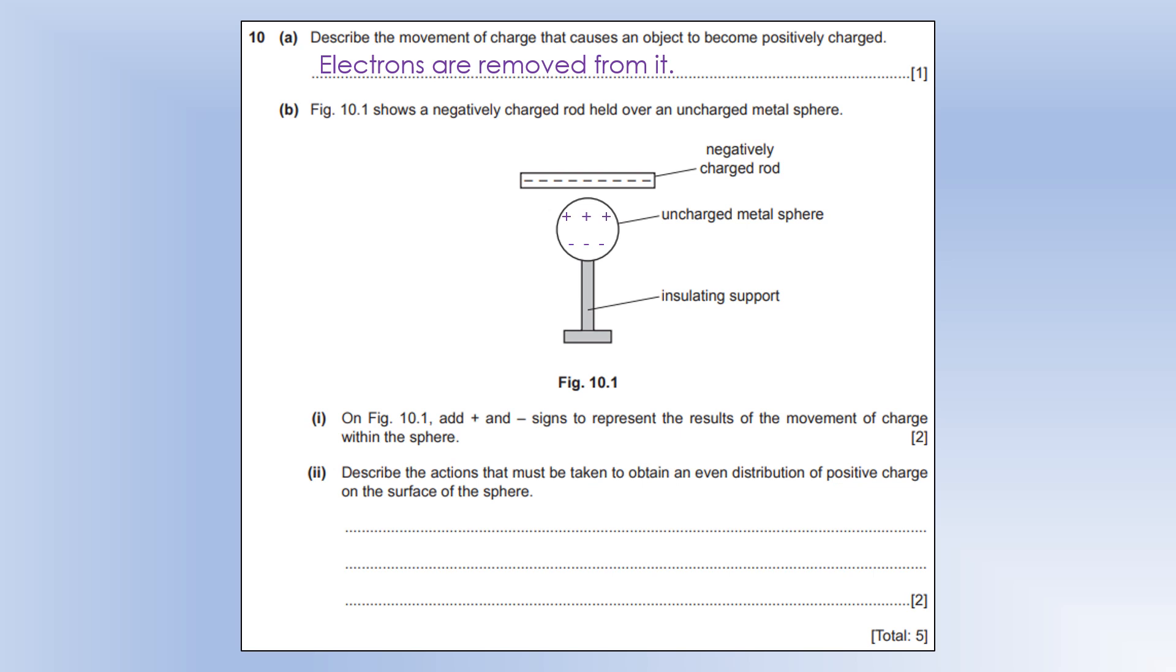Describe actions that must be taken to obtain an even distribution of positive charge on the surface of the sphere. We must remove the electrons from it. So, we're going to connect the sphere to Earth while the rod is close so that the electrons don't just move to the other side, the electrons leave the sphere entirely. Then you remove the Earth and then remove the rod, and that would leave you with a uniformly charged metal sphere.